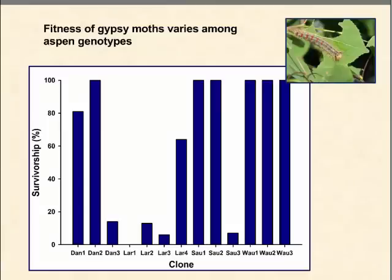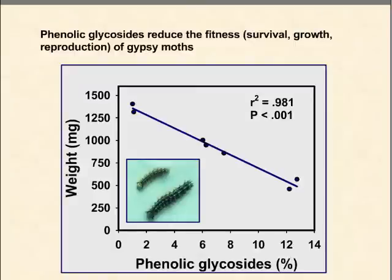In feeding studies with gypsy moths, fitness in terms of survivorship of larvae can range from zero to 100 percent on different Aspen clones, and that difference in survivorship is strongly correlated with phenolic glycoside production. The weight of gypsy moths is strongly and inversely proportional to phenolic glycoside levels in their food — each point represents a different Aspen clone, and phenolic glycosides explain fully 98 percent of the variation in insect size.